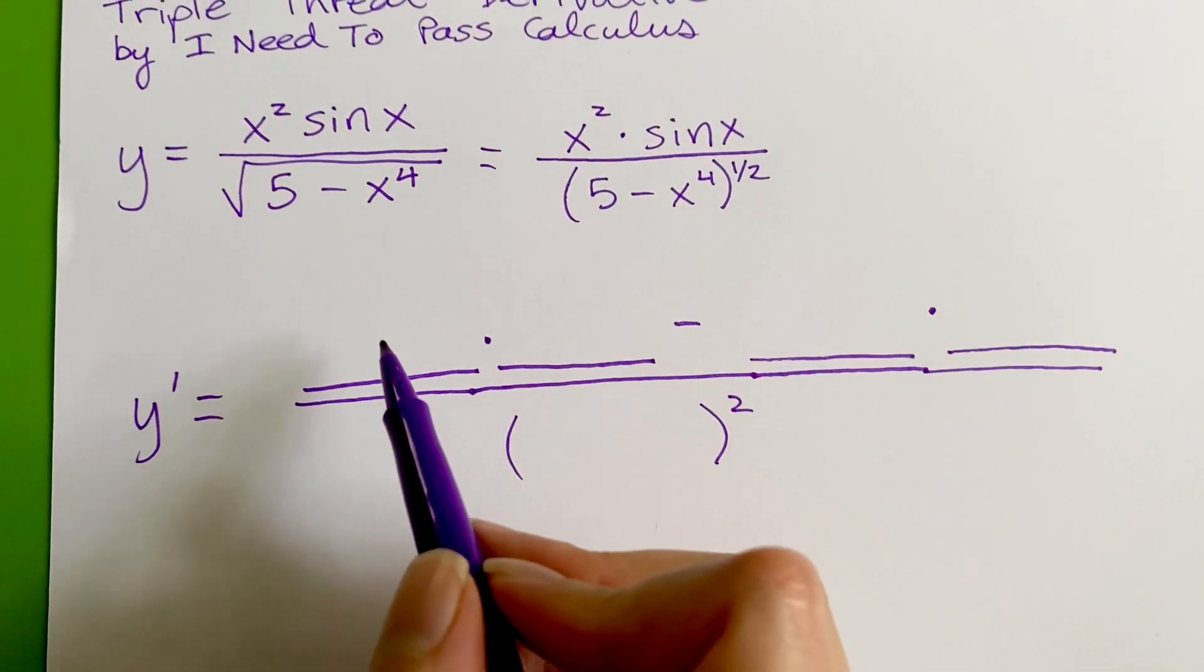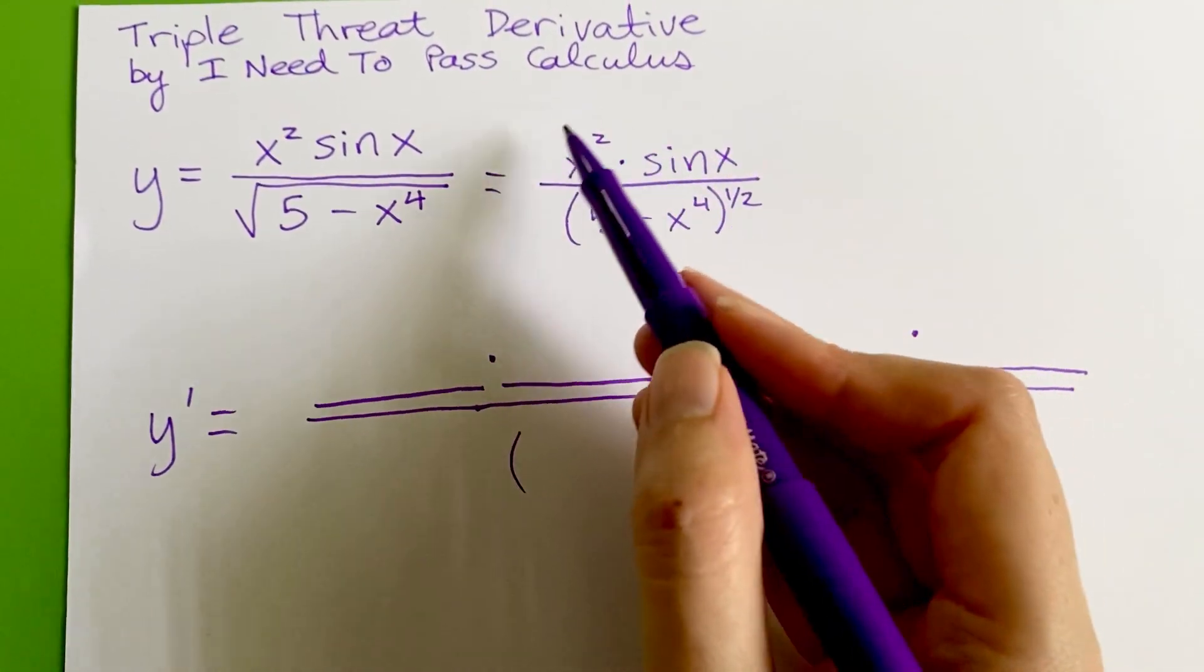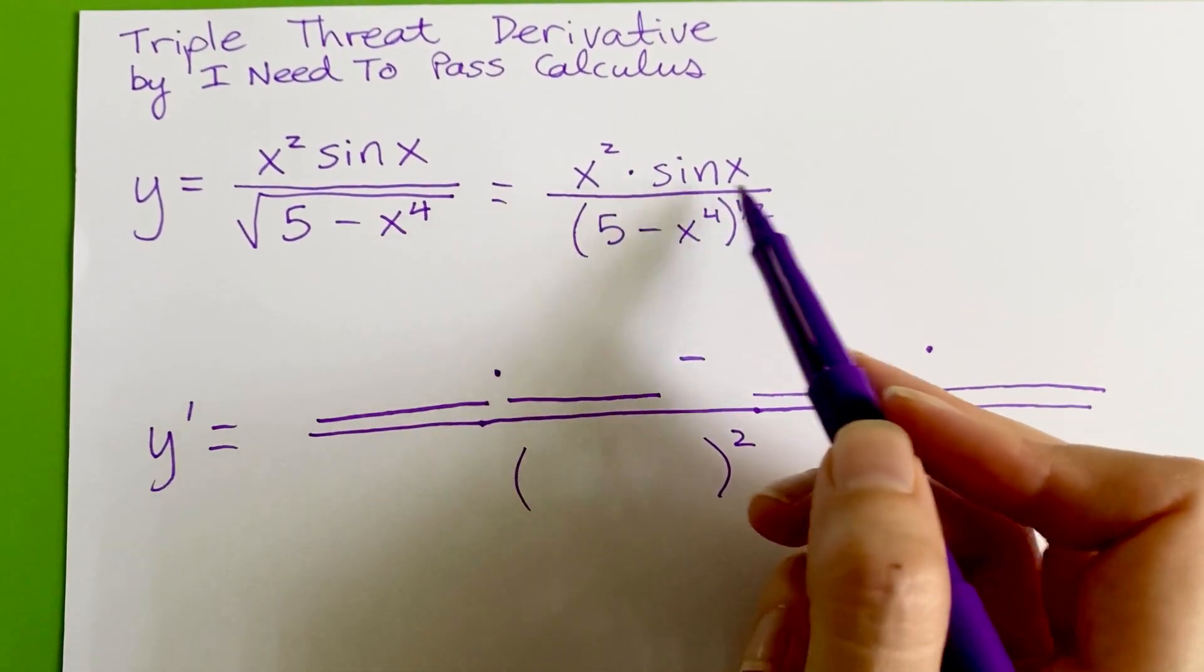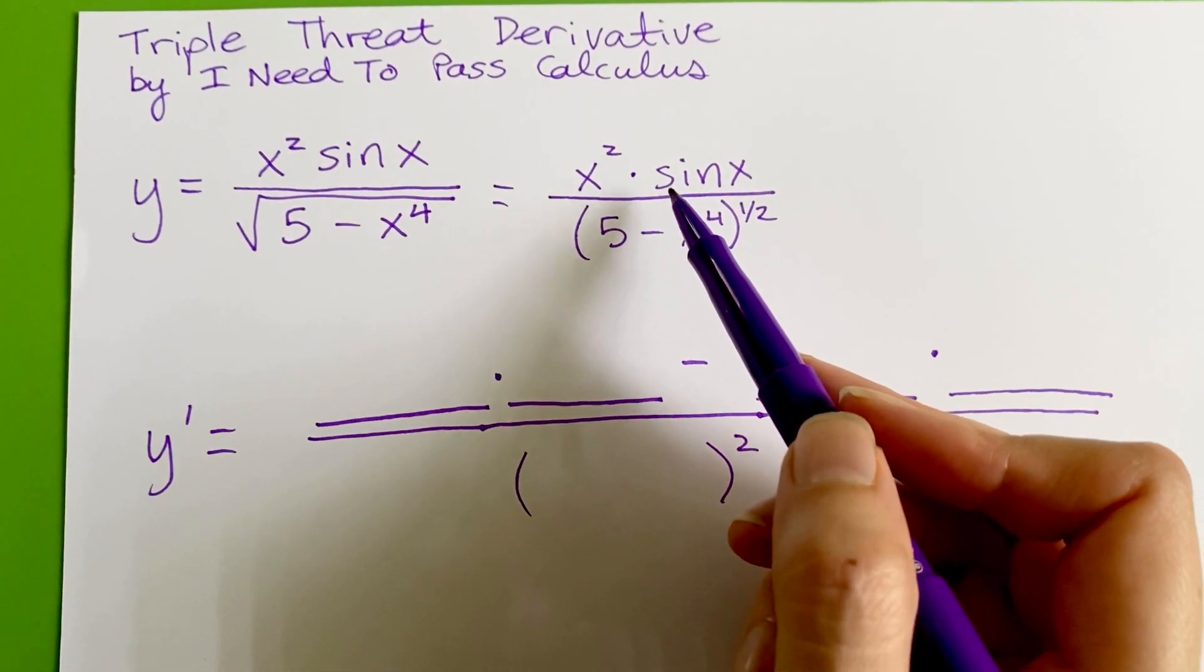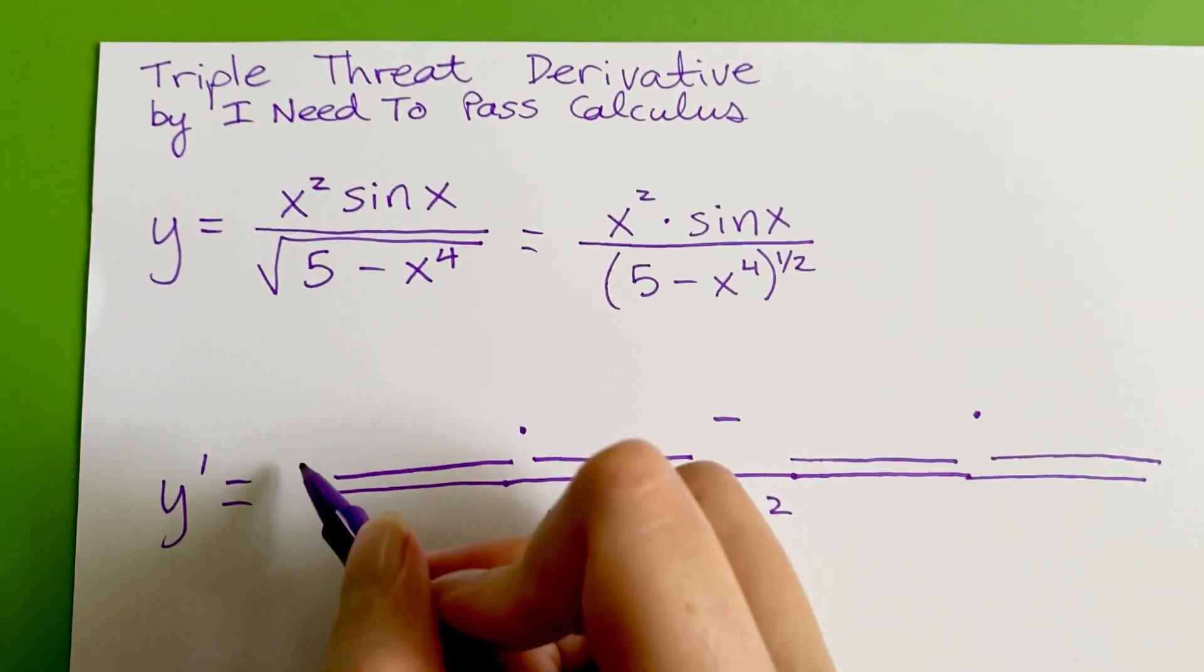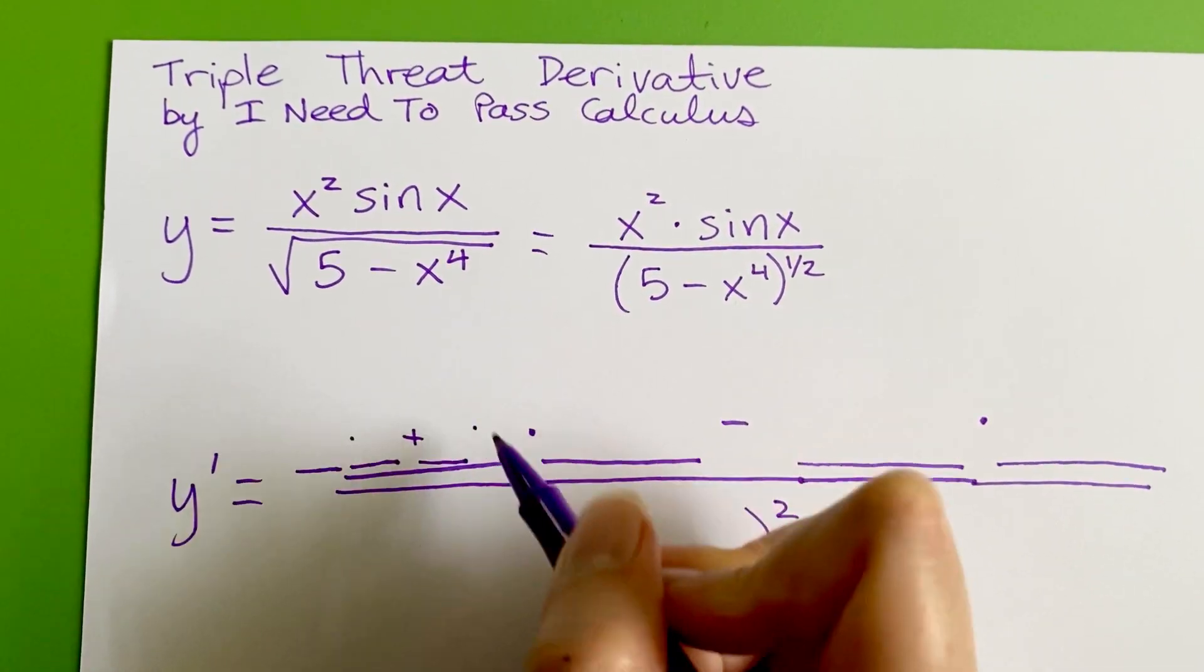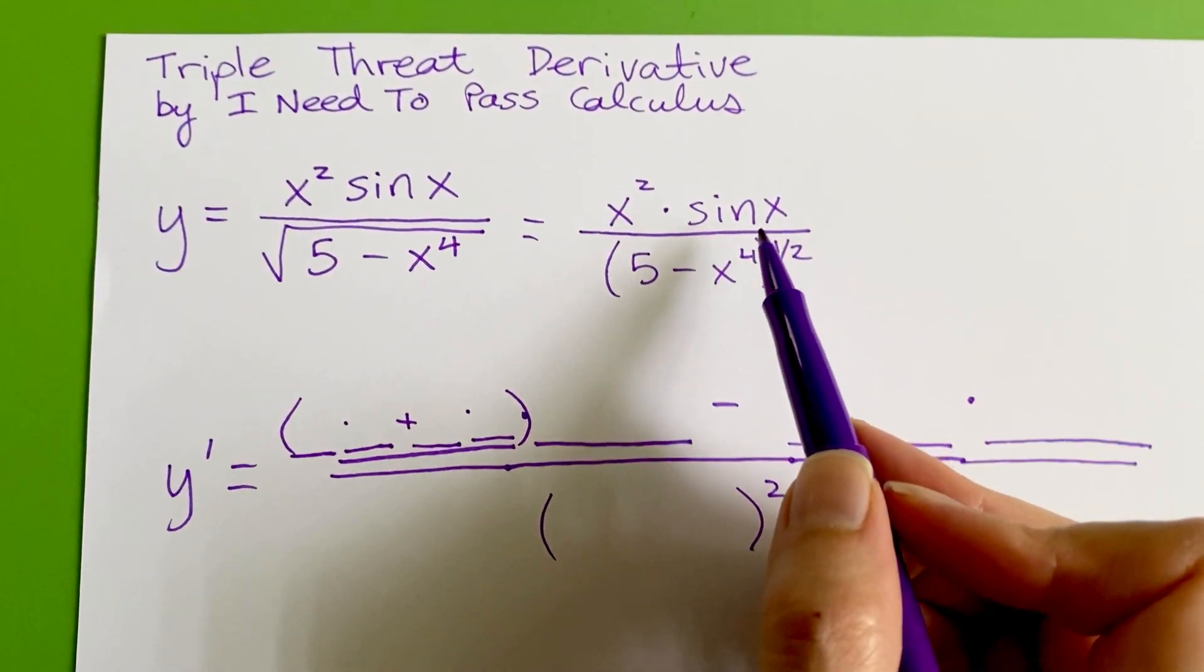And for the quotient rule, this first blank is filled in by the top part's derivative. So in order to take the top part's derivative, now treat this as a miniature problem. Okay, the top part is a product, so I actually have to do the product rule within this blank here. So I have blank times blank plus blank times blank. And how does that product rule go?